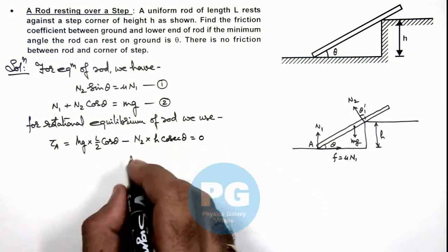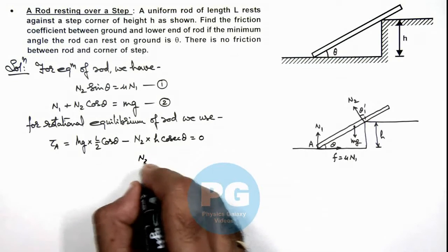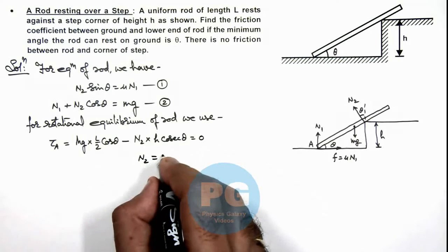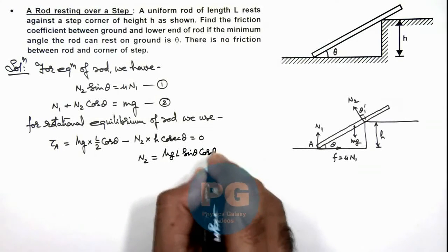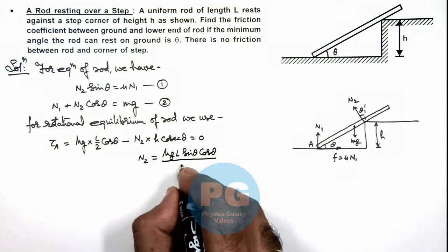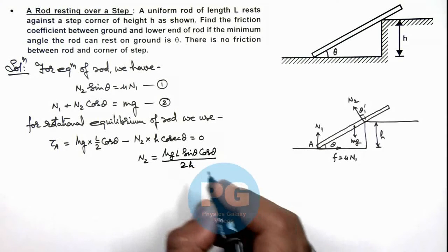So here on simplifying, the value of N2 we are getting is mg L sine theta cos theta divided by 2h.